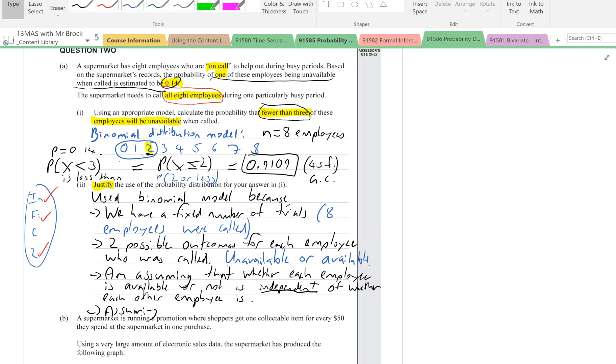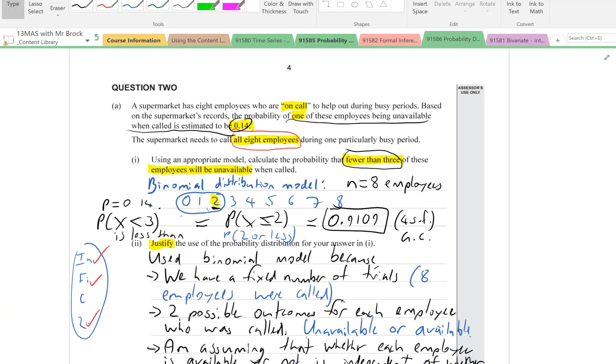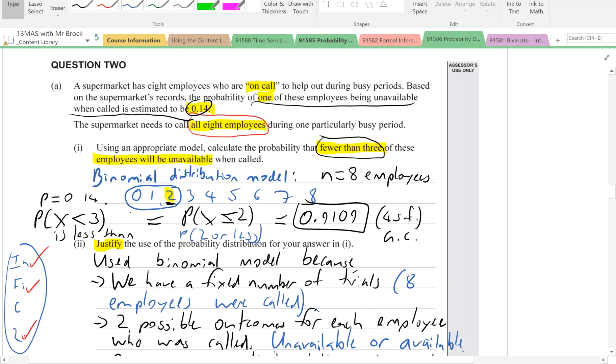The last one we have to look at is the constant probability of success. In this case, that means, do we have reason to believe that the probability of each of those eight employees being unavailable will stay at 0.14?